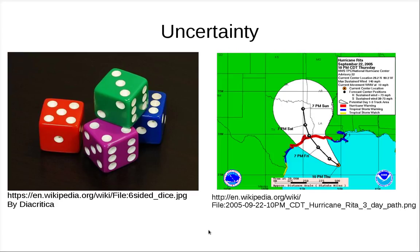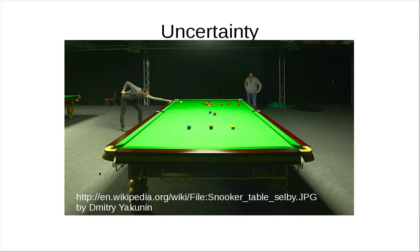In many cases, uncertainty is about lack of information. Like in this case, we don't know for sure — we know all the physics, but we don't know for sure how things are. Like in snooker, there's some uncertainty, some chances. Because the physics is clear, but you don't know all the details of the data, so there's some uncertainty.